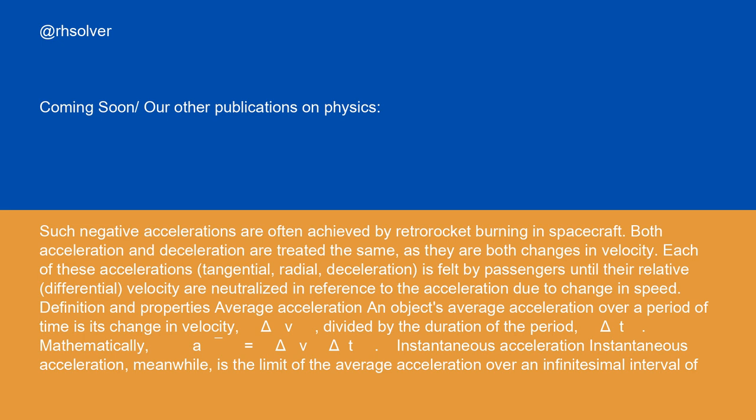An object's average acceleration over a period of time is its change in velocity (Δv) divided by the duration of the period (Δt). Mathematically, average acceleration = Δv / Δt.